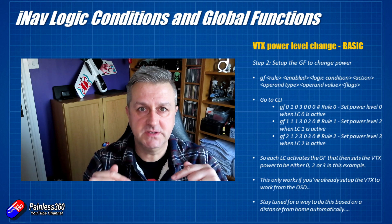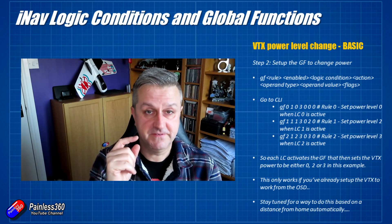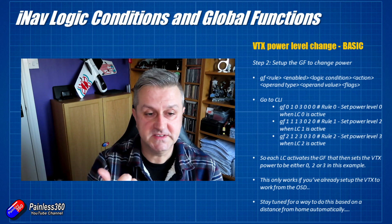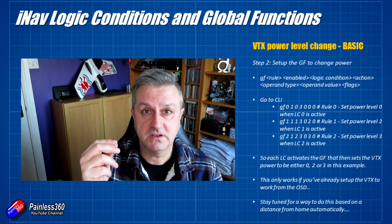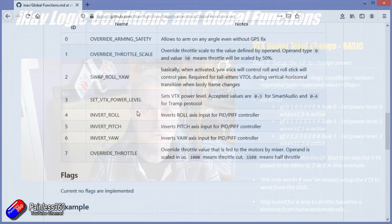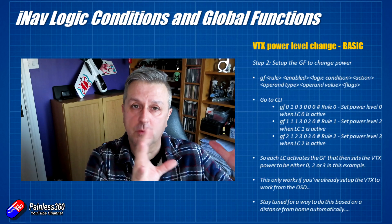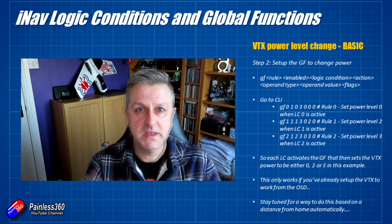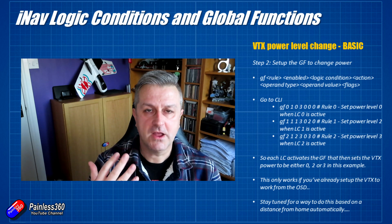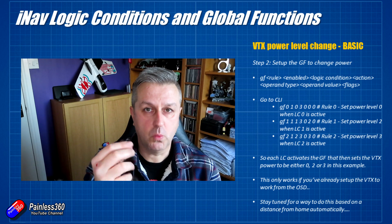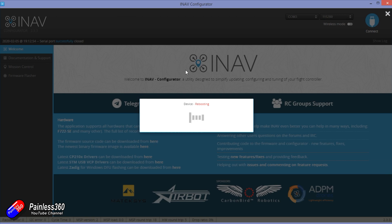The three commands I'm putting in are shown on the slide. Each one sets one of the power levels. For example, the first one says: global function 0 — because numbering starts from zero — enabled (1), logic condition 0, which is channel 7 in the low position, action 3 meaning set VTX power, operand value 0, which on my setup is 25 milliwatts. The other two set different rules for logical conditions 1 and 2 for power levels 2 and 3. Let me show you how I set this up in the CLI within iNav.